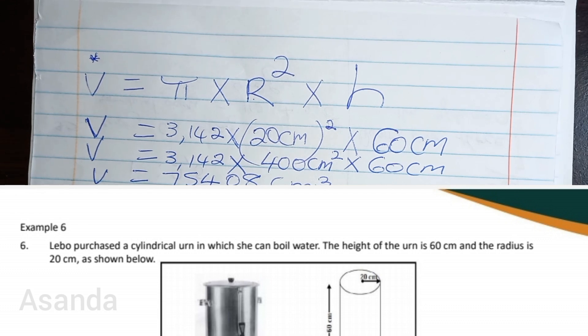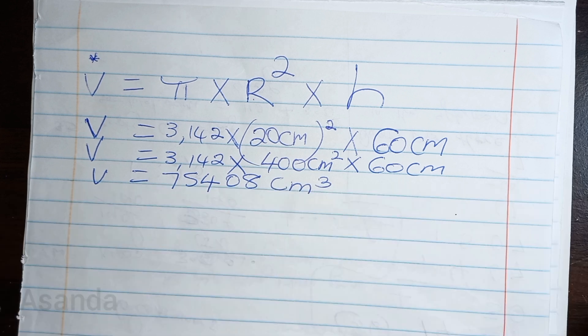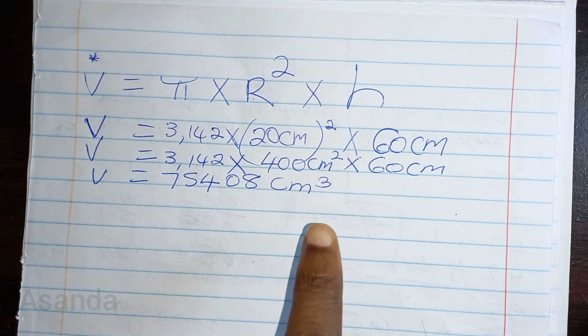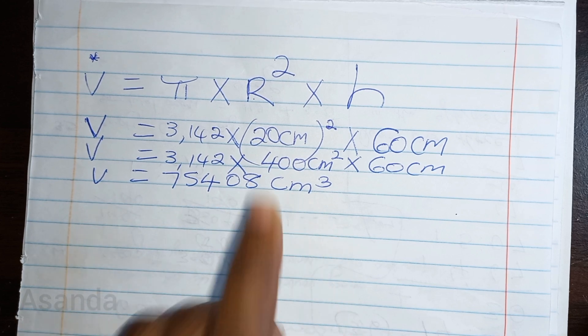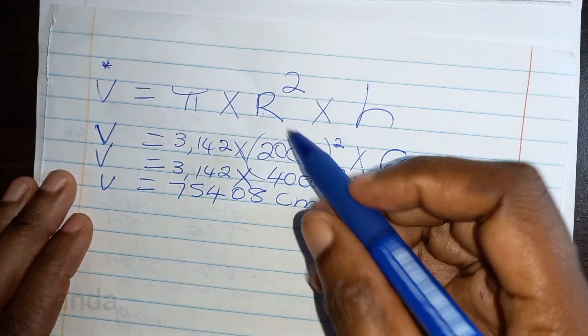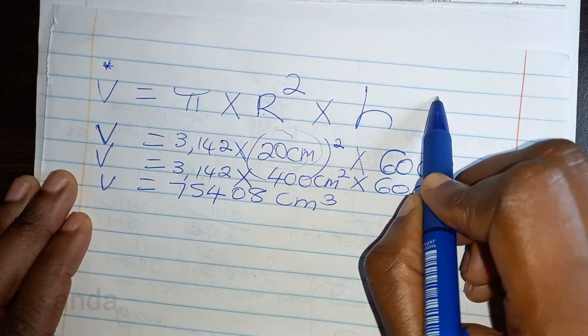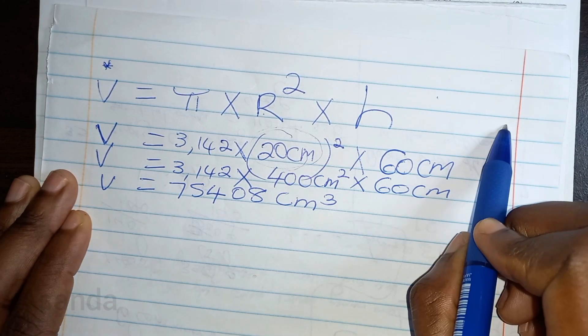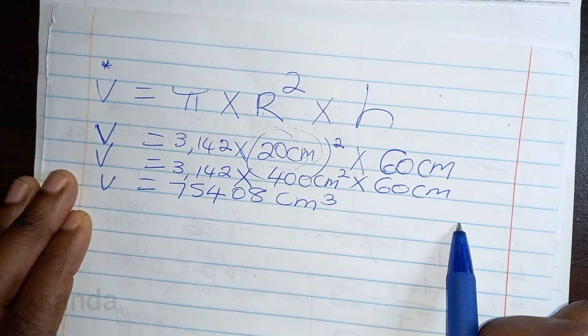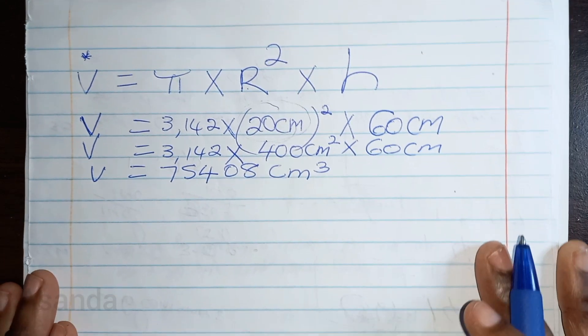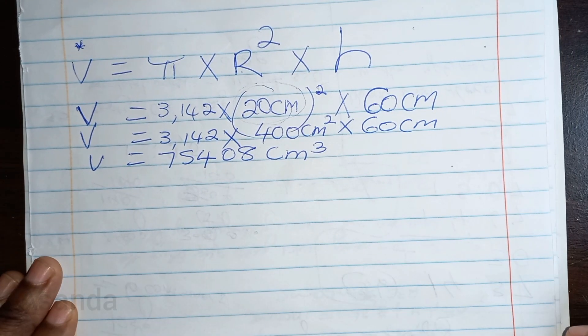Now I'm just going to add one last part. If it said leave your answer in cubic meters, you don't have to convert during calculation. What you can do is convert the radius first to meters, convert the height to meters, and then do your calculations in meters. But you can also just convert the answer.